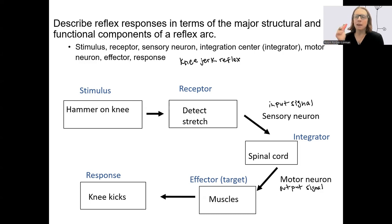So here's the basics. Hammer on the knee. It's not really on the kneecap itself. We'll get back there. We've got detecting stretch. This information goes to the spinal cord. Then we've got the muscles that are going to cause a kick.